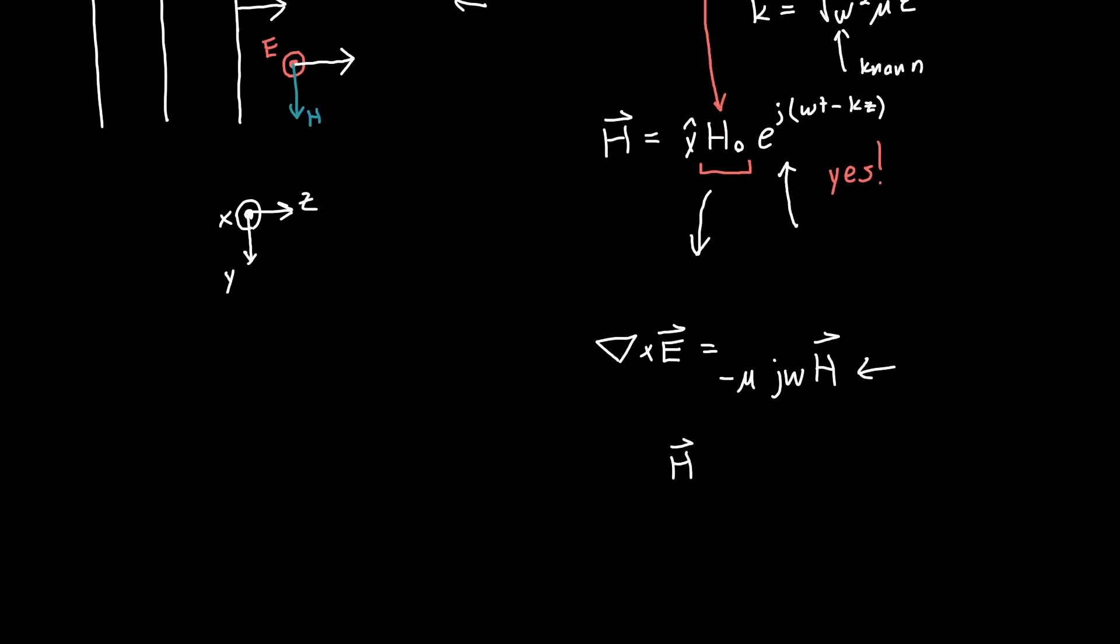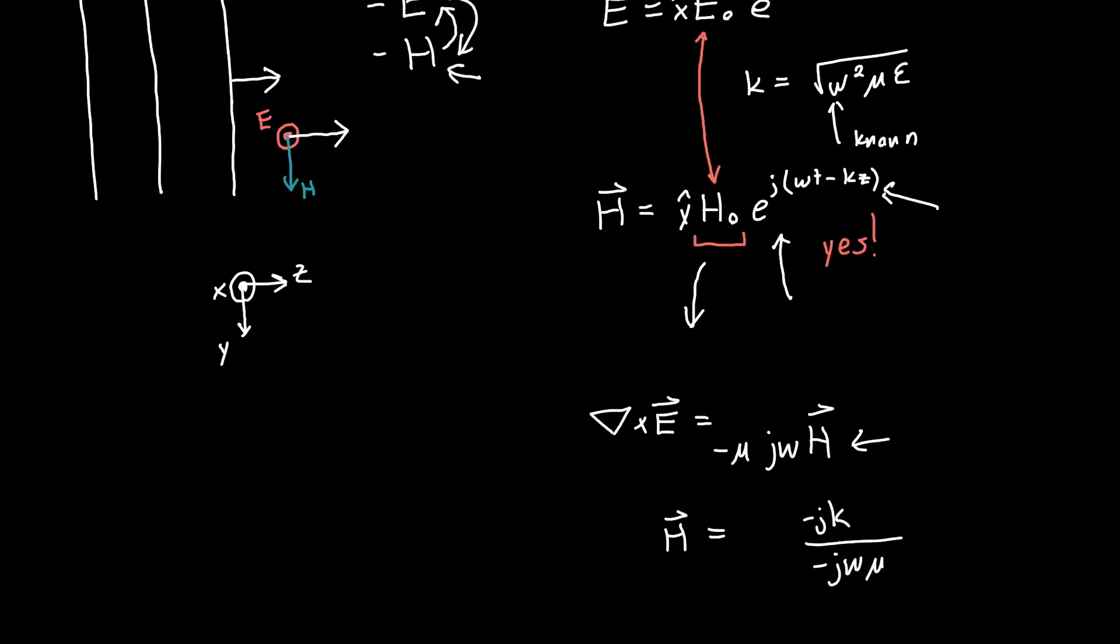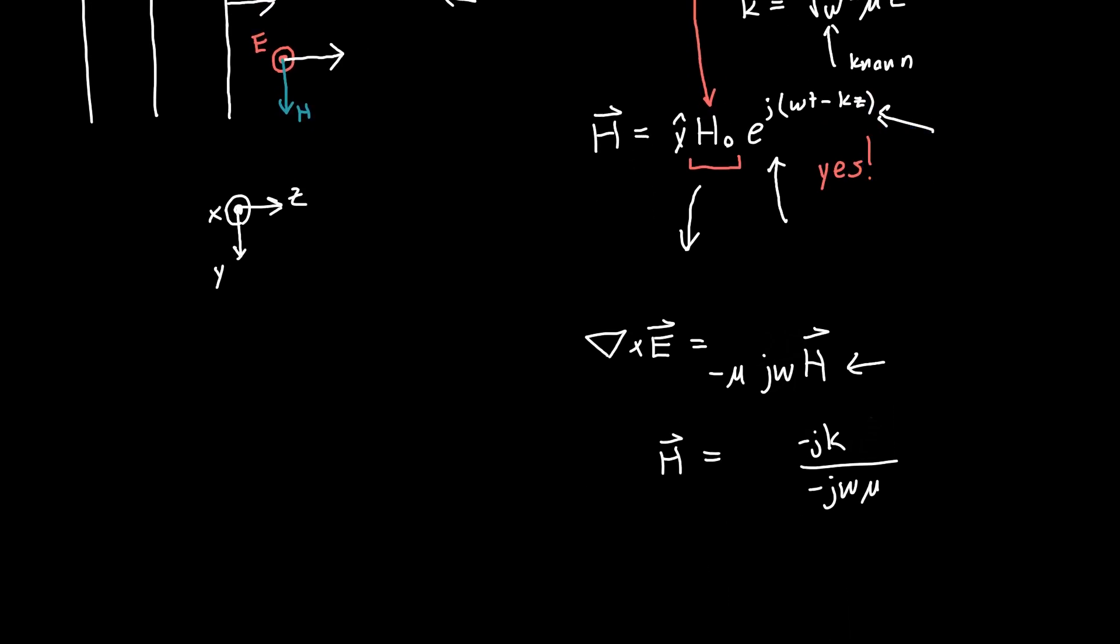So H is just the curl of E divided by -jωμ. Now the other beautiful thing about complex notation is any derivatives are easy to take. So you can actually take the curl of the electric field. I'm not going to do that here because that's excess math, it's fairly straightforward to do. But if you do it, you'll get that it's just -jk times what we had originally, except now it's in the Y direction because we're taking the curl, instead of in the X direction like it was before.